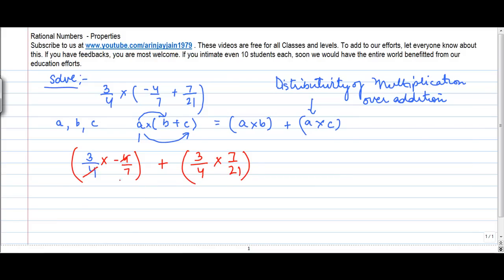So here this 4 goes off into this 4, minus 1 into 3 gives me minus 3 upon 7 plus... 7 goes into 21 three times, 3 goes off at 3, giving 1 by 4.